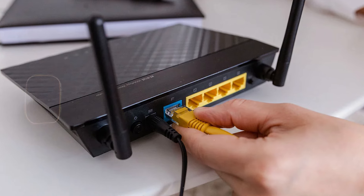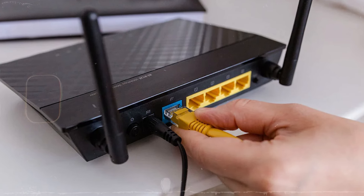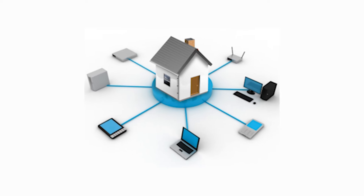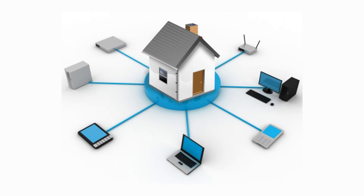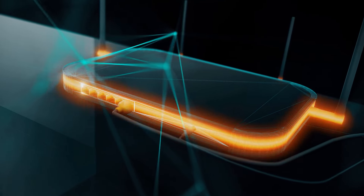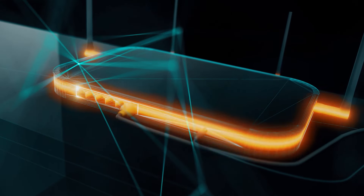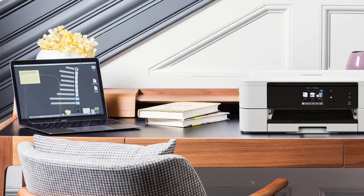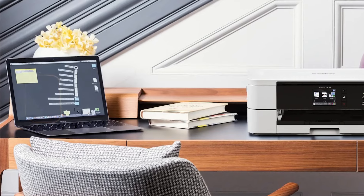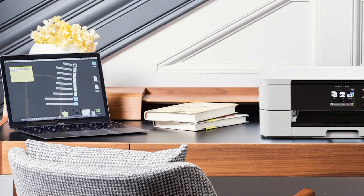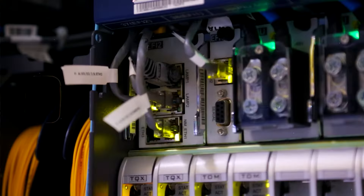Technically classified as a Local Area Network, also known as a LAN, a home network typically consists of a router — the central device that connects to the internet and manages communication between devices. Most routers also include built-in Wi-Fi capabilities. You then have the modem, which connects the home network to the Internet Service Provider, the ISP. And you have devices: computers, smartphones, tablets, printers, and any smart home devices that require internet connectivity.